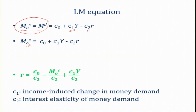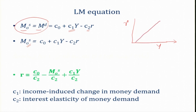Solving for r, because we measure the rate of interest on the vertical axis and income on the horizontal axis, we rewrite the equation as: r = (c₀/c₂) - (M₀ˢ/c₂) + (c₁/c₂)y. The slope of the LM curve is Δr/Δy, and from this expression the slope is determined by the coefficient c₁/c₂.